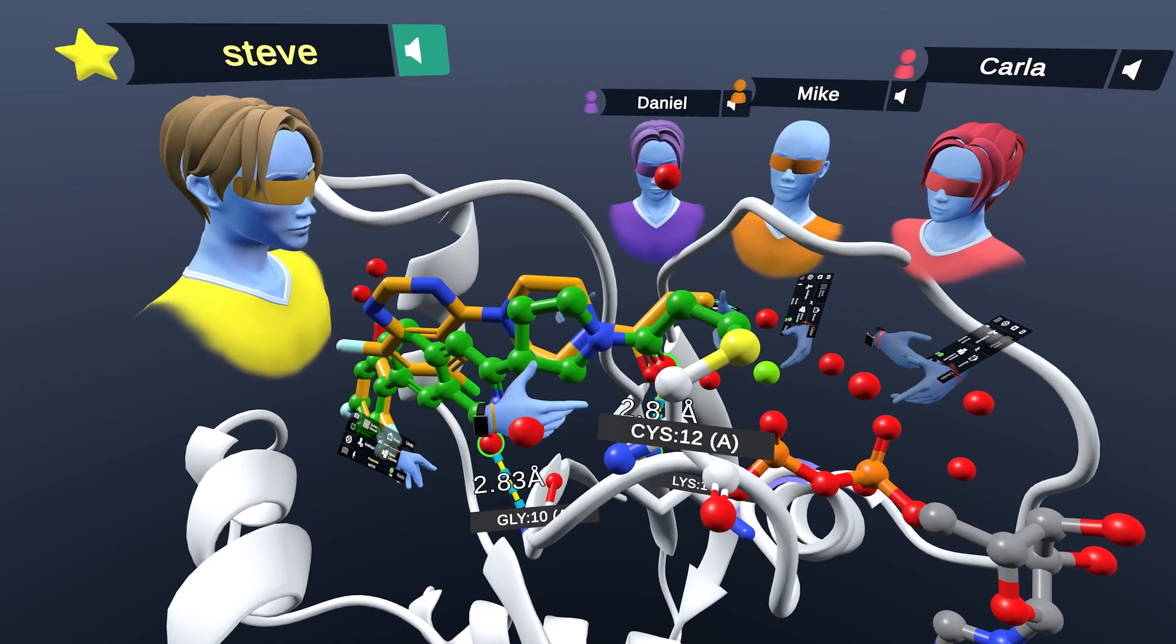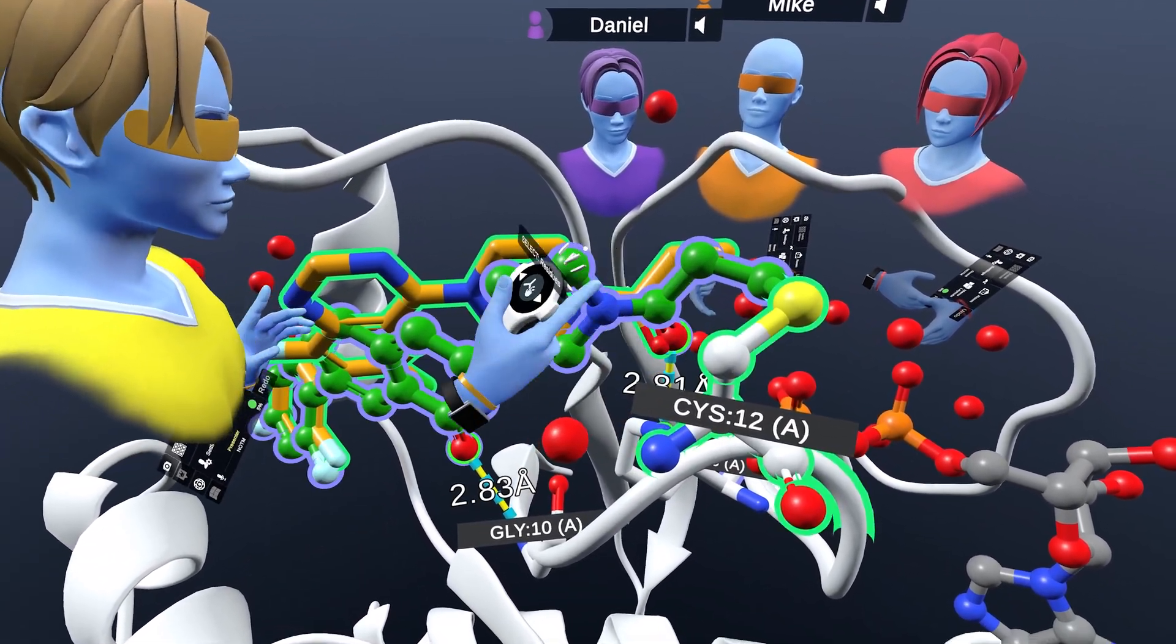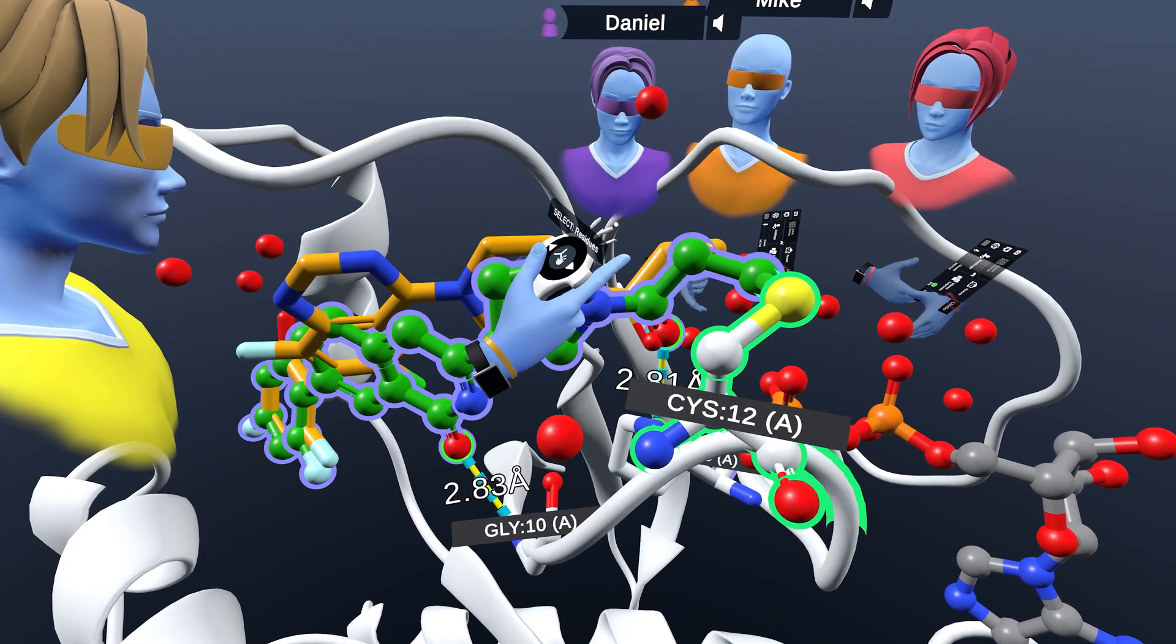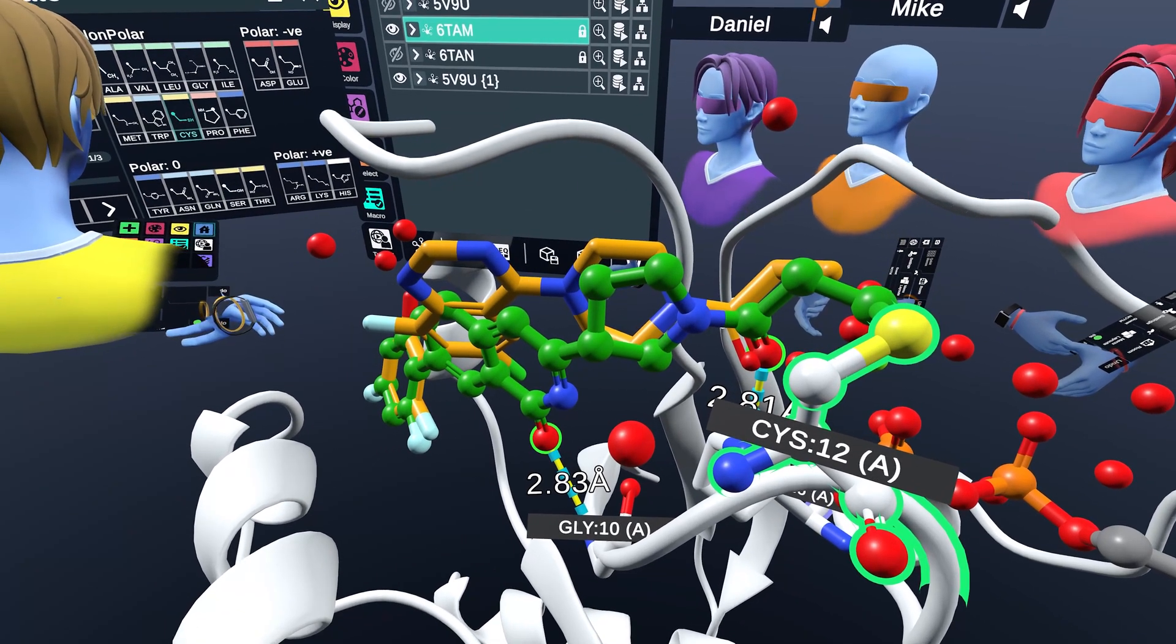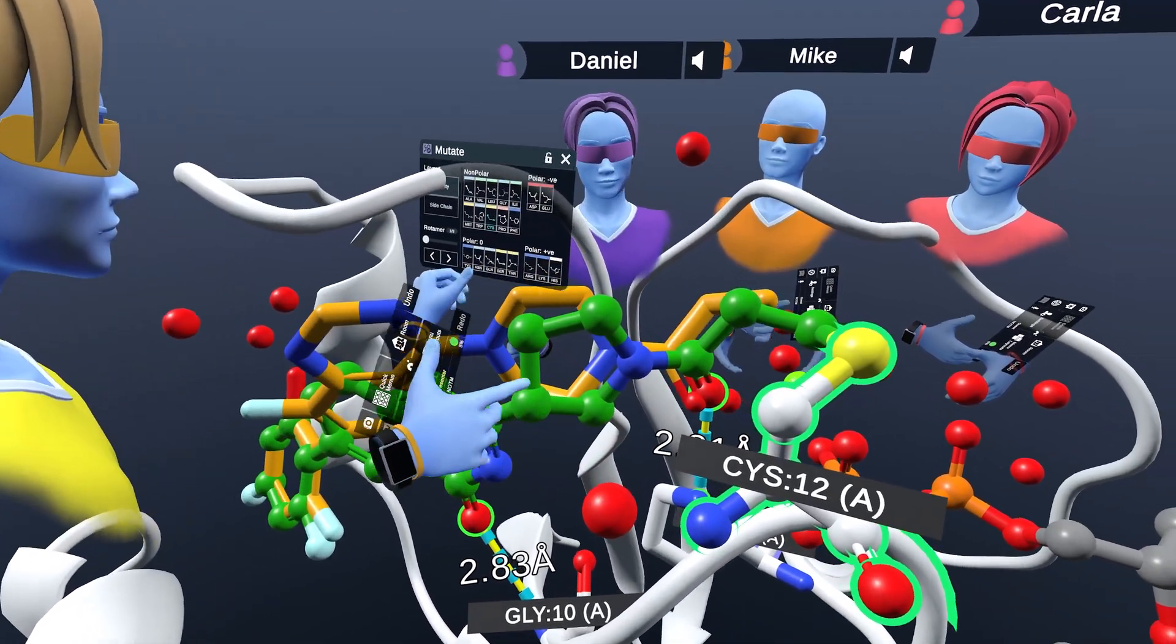So we have the cysteine 12, which is going to be the mutated type. But if we select just the residue there, and then we pull up our handy dandy mutation menu, we could actually mutate that. So right now it's a cysteine.